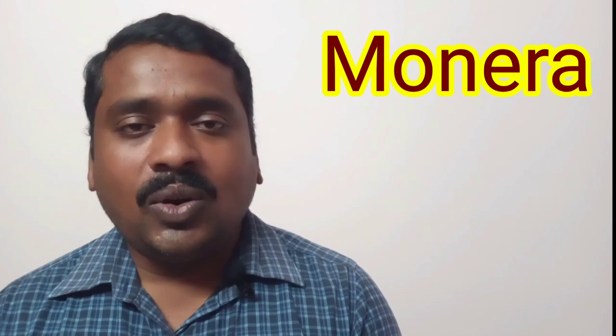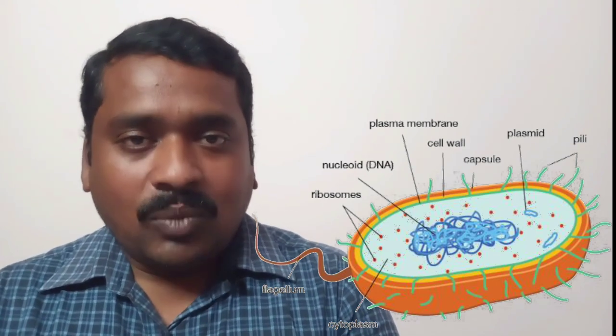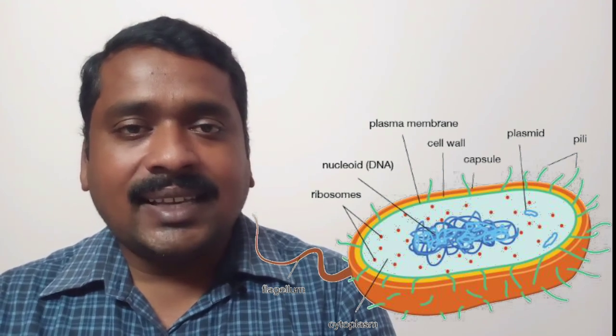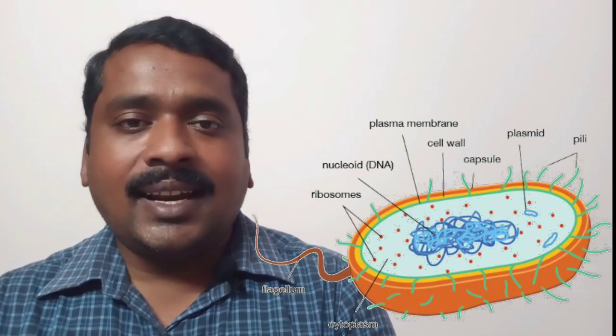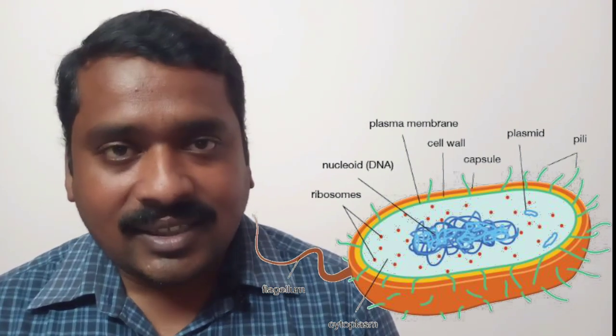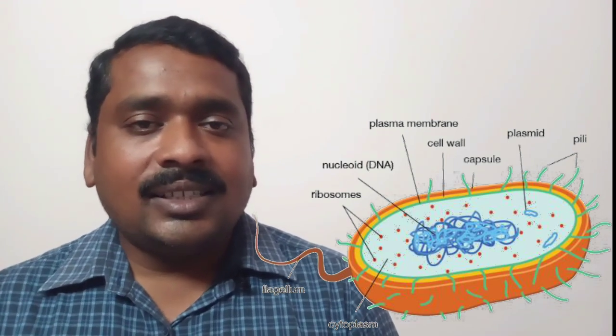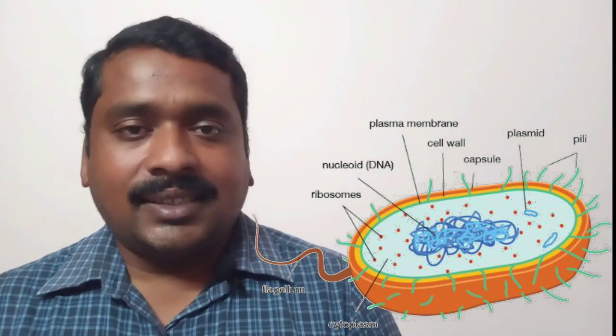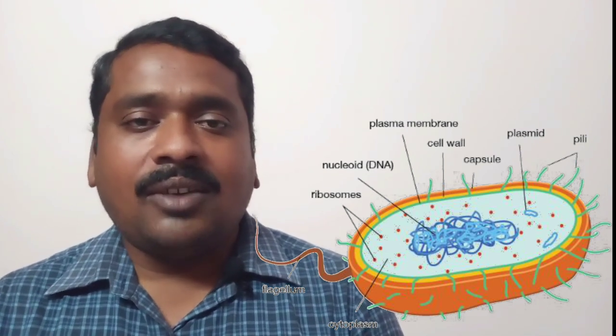These three factors are the main basis for the five kingdom system. R.H. Whittaker, based on these three factors, divided organisms into five kingdoms. The first kingdom is Monera. The name Monera is derived from the term 'mono,' meaning single. In Monera, all organisms are single-celled, unicellular organisms, and all organisms of Monera have prokaryotic cells.